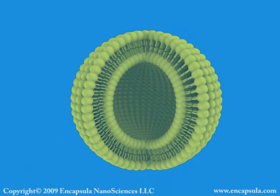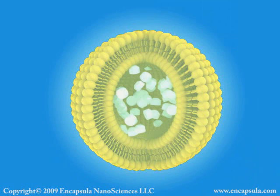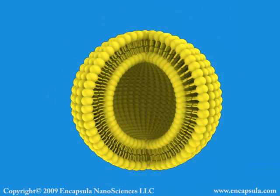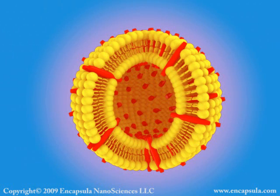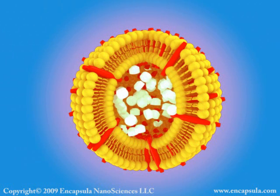Fluorescent liposomes can be made by encapsulating fluorescent molecules in the aqueous interior of the liposome, or by adding fluorescent lipids to the bilayer. In some cases, it is useful to have both the aqueous content and the lipid bilayer labeled simultaneously with different fluorophores.